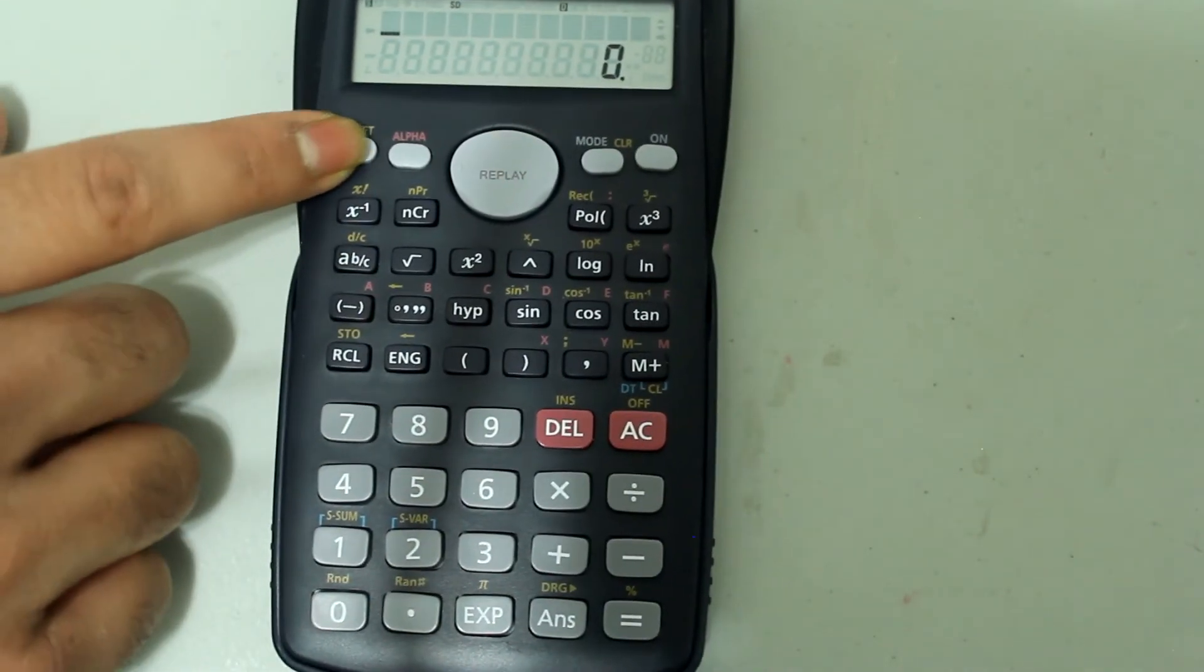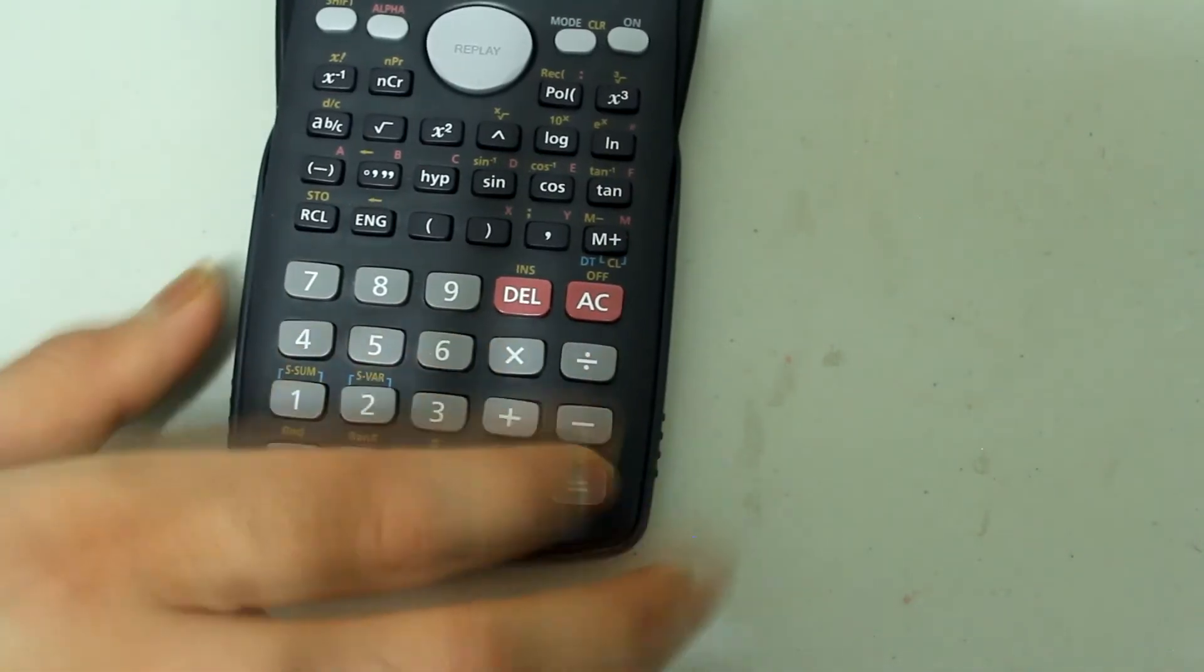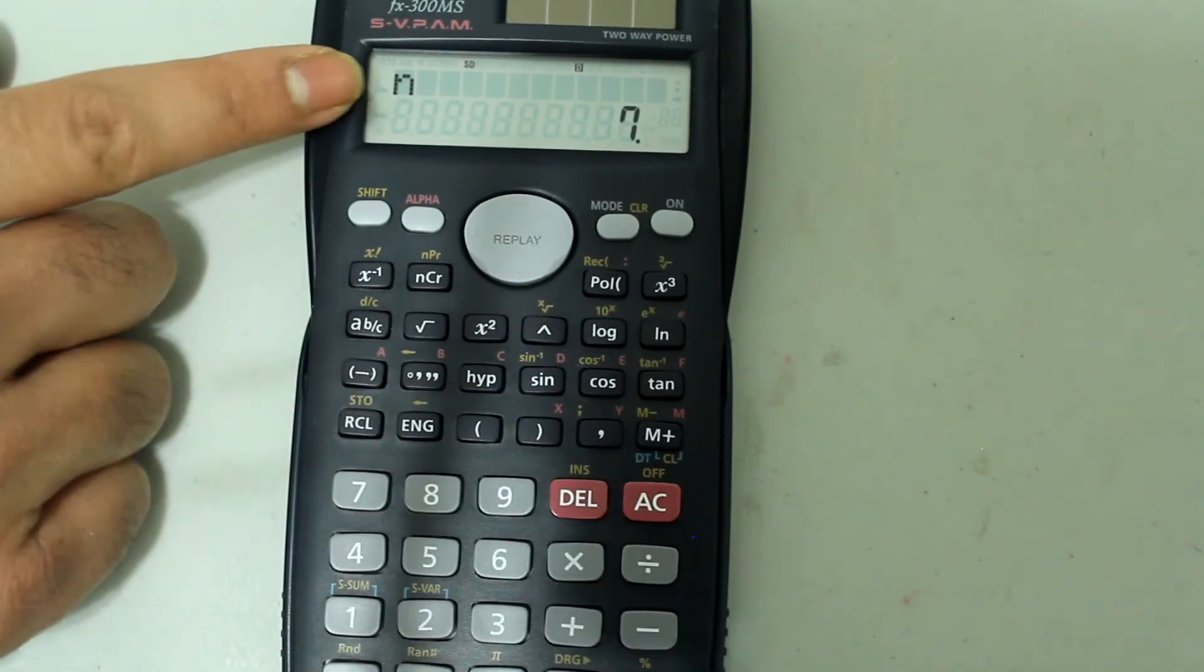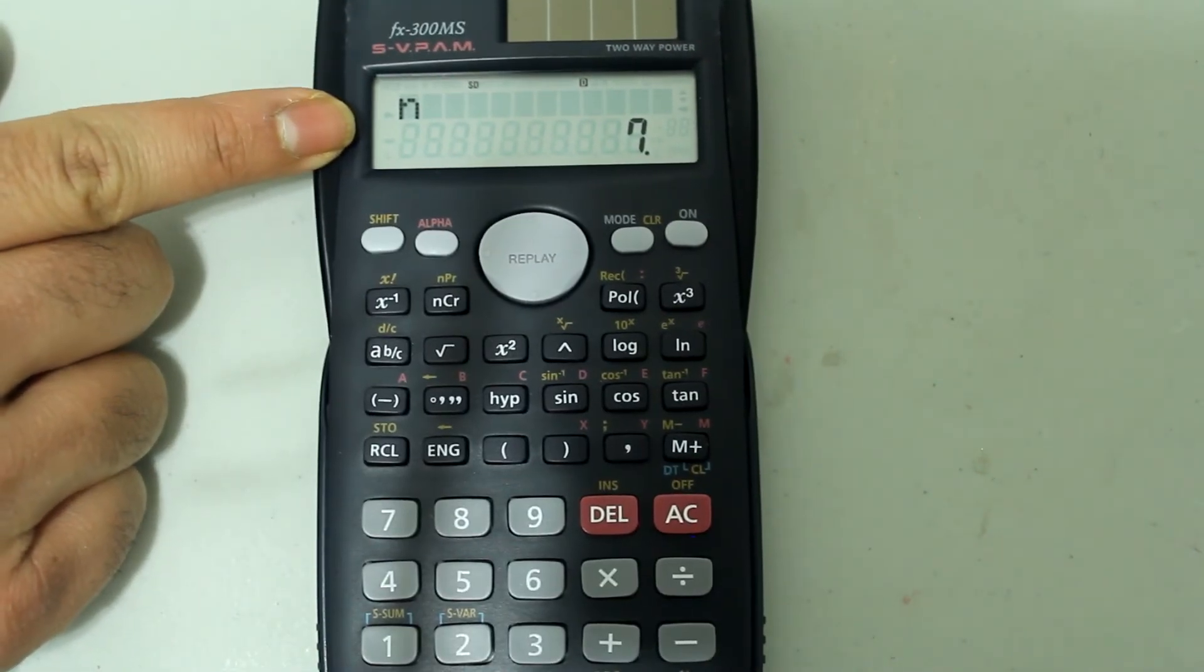Press shift and 1, and if you select n, which is 3, press equals, it just lets you know how many pieces of data you have entered.